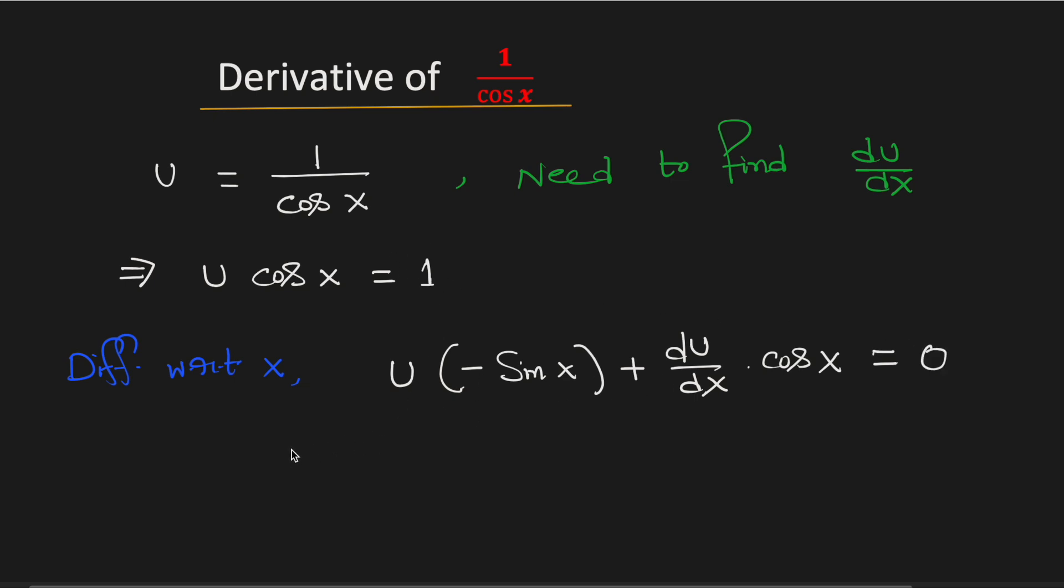Now simplifying this equation we have u times sine x is equal to du dx times cosine x. So du dx is equal to u sine x divided by cosine x.